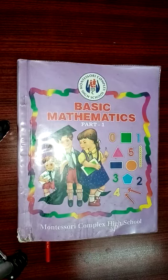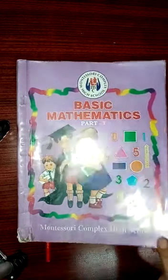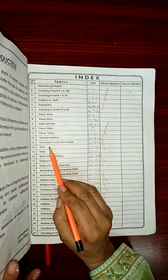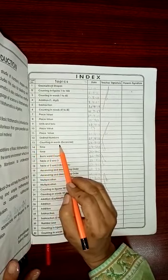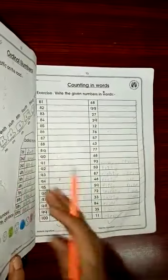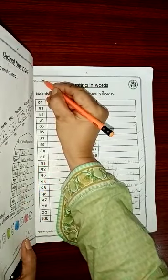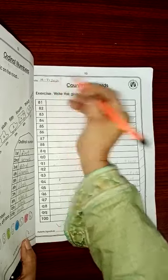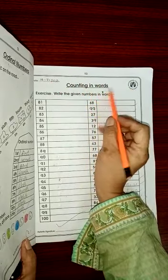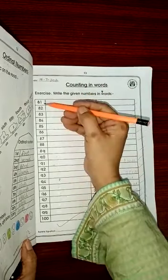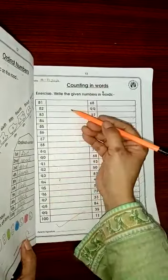Assalamualaikum Class 1. Take out your index. Today is your math class. Take out your index and write down the date on page number 13, counting in words exercise. You have to add your date now. Take out page number 13. First you write down the date 10/7/2020. Counting in words exercise: Write the given number in words. Class, here we have numbers and we have to write them in words.